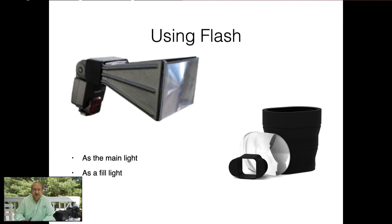Now let's get to using artificial light and flash for bird photography. There are really two ways to use your flash: one is as your main light, and the other is as a fill light. My preference is to use it as fill light because you want natural surroundings and natural light. A little bit of fill just to get a catch light in the eye is not a bad thing, but artificially lighting your subject goes contrary to nature photography guidelines where you want everything to look natural.